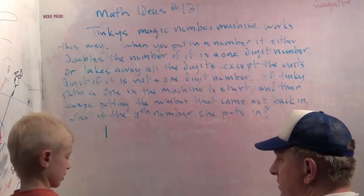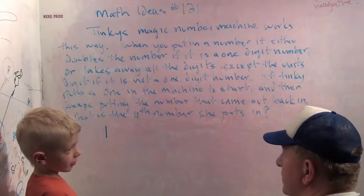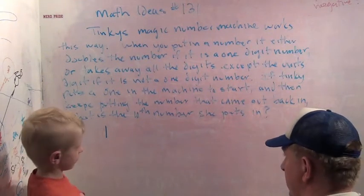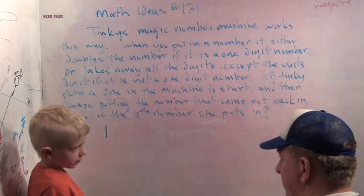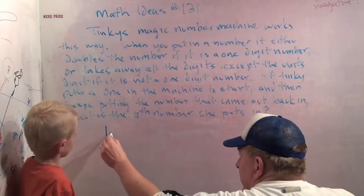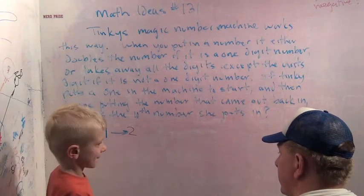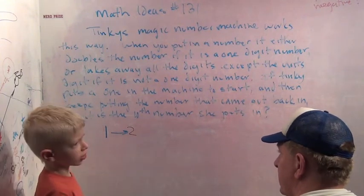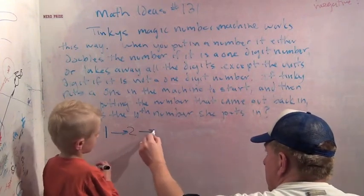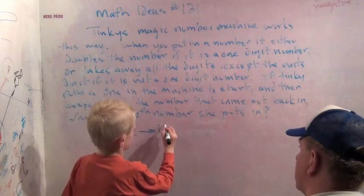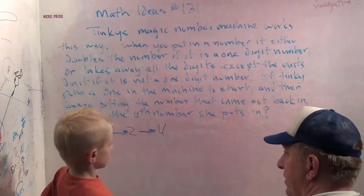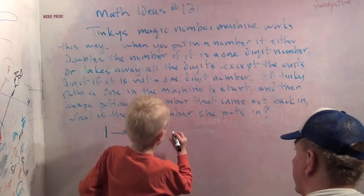Well, what is one plus one? That is two. So you just want to make the list of numbers? Yeah. So the one turns into a two. Write that down. What does the two turn into? A four. What does the four turn into? Eight. Make your arrow.